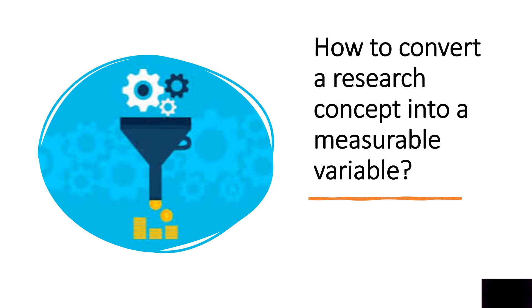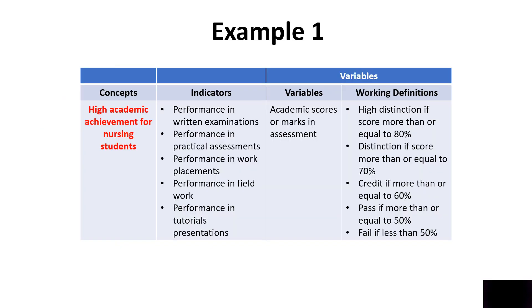Let's take some examples so that you can understand what we mean by a concept and a variable and how you can convert from one to the other. Mainly we convert concepts into variables so that we can measure them in our research studies. And then we can study relationships between the variables and provide the findings to the examiners or reviewers or our readers.